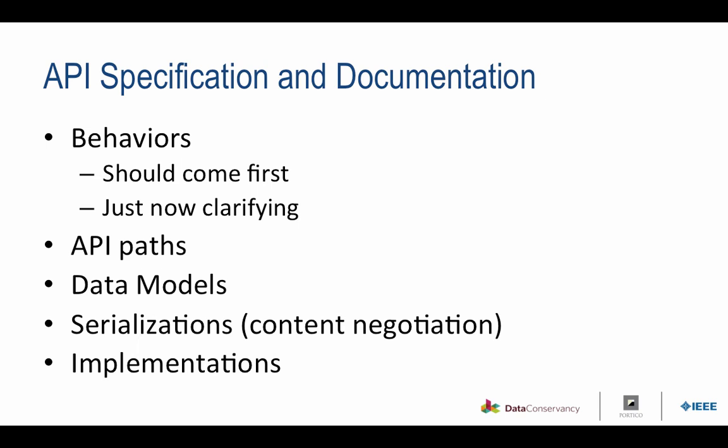An initial approach often taken in API development is to specify the paths of the APIs. We started down that approach and found it's really important to talk about the behaviors of the APIs even before talking about what the resource paths look like. We didn't do that at the beginning and we're circling back — they really should come first, and that's a lesson learned. So we're then looking at API paths, the data models associated with the APIs which can be slightly different from the underlying data model, serialization of those models — for example if we're sending something in an ORE model, we might serialize it as Atom, RDF/XML, or JSON-LD — and then implementations associated with those.